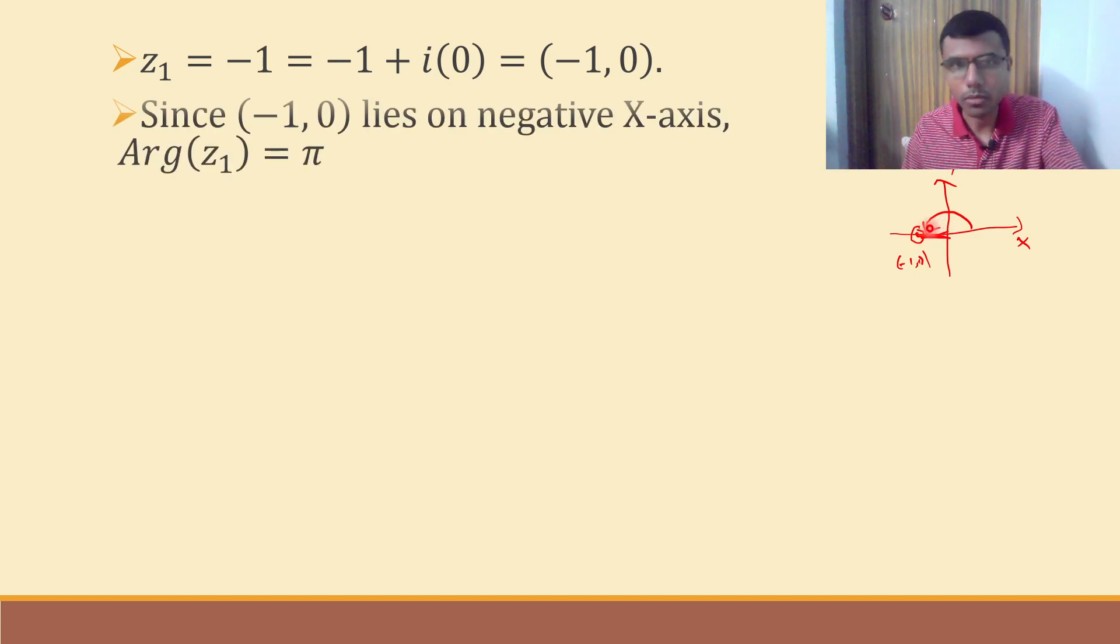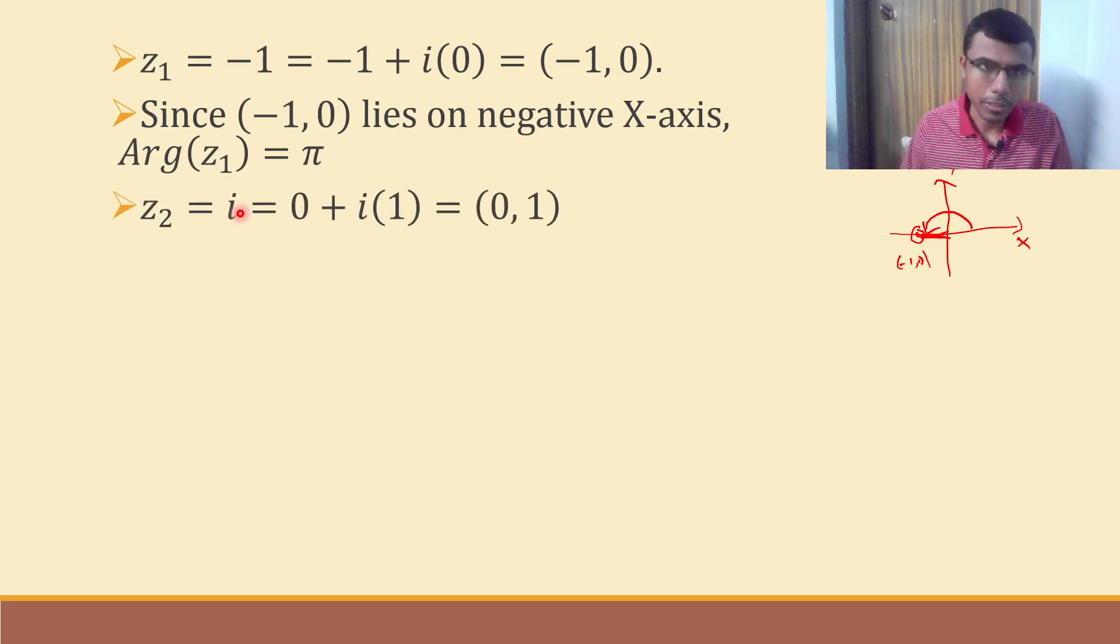Likewise, next point is z2 is i, so i can be written as 0 plus i into 1, so this point is nothing but 0 comma 1. I hope things are clear.